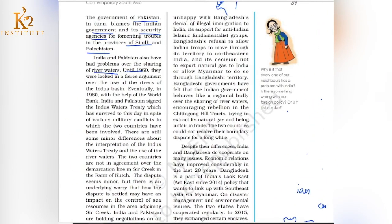We are also unhappy with Bangladesh over the issue of illegal immigration to India. When Bangladesh was part of Pakistan, the refugee problem reached a very extreme level. Many people are infiltrating from Bangladesh to India because there is not much development in Bangladesh, but there is a lot of employment in India. These people come and live and work in India, which strains India's resources.